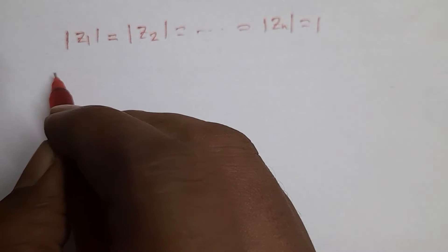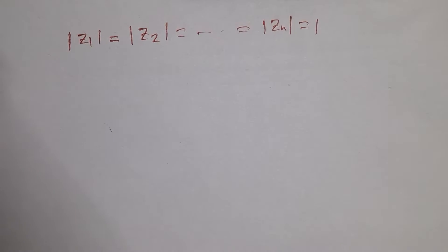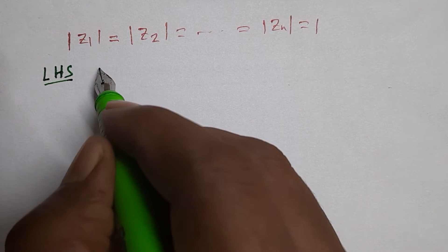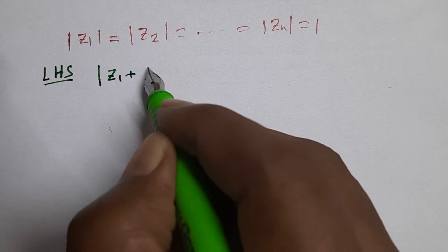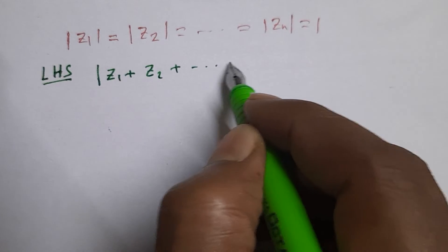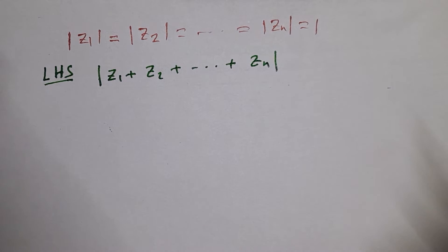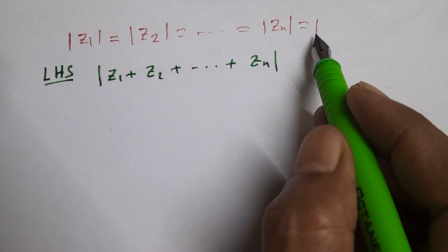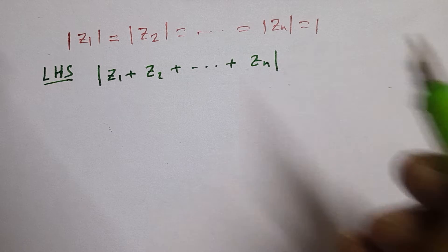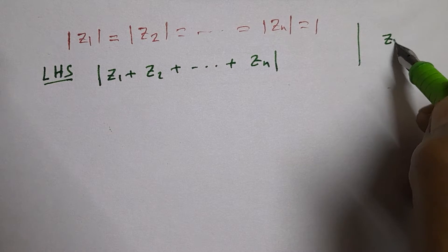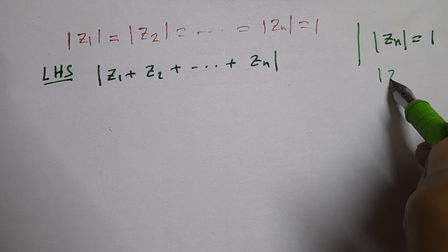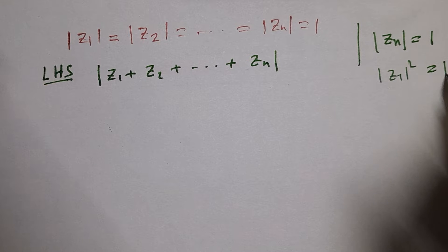When this condition holds, then the LHS is the modulus of z₁ + z₂ + ... + zₙ. We start by noting that |z₁| = 1.